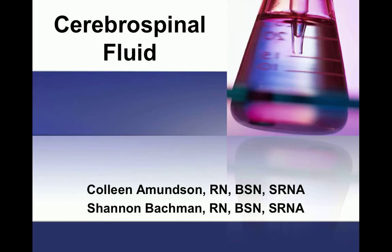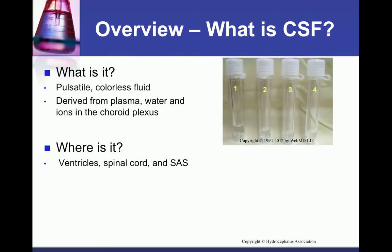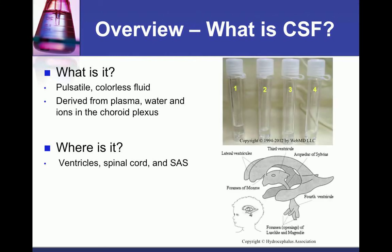Hello, today Colleen and I will be discussing cerebral spinal fluid with you — how it's formed, how it moves throughout the body, and why we care about it. CSF is the pulsatile, colorless fluid that bathes the central nervous system. It is derived from the exchange of plasma, water, and ions into the ventricles of the brain by the choroid plexus.